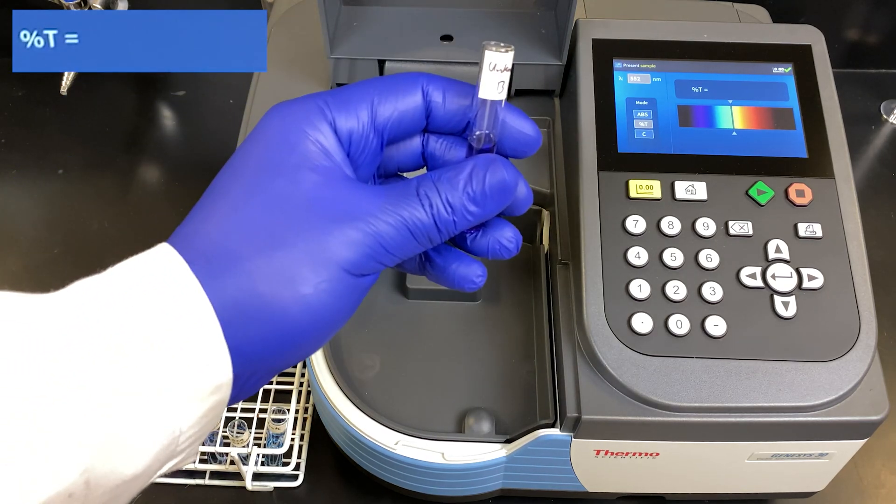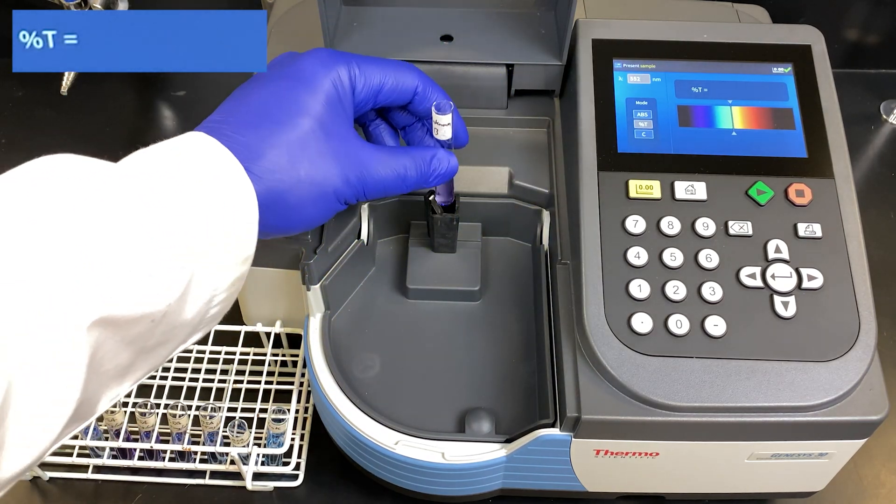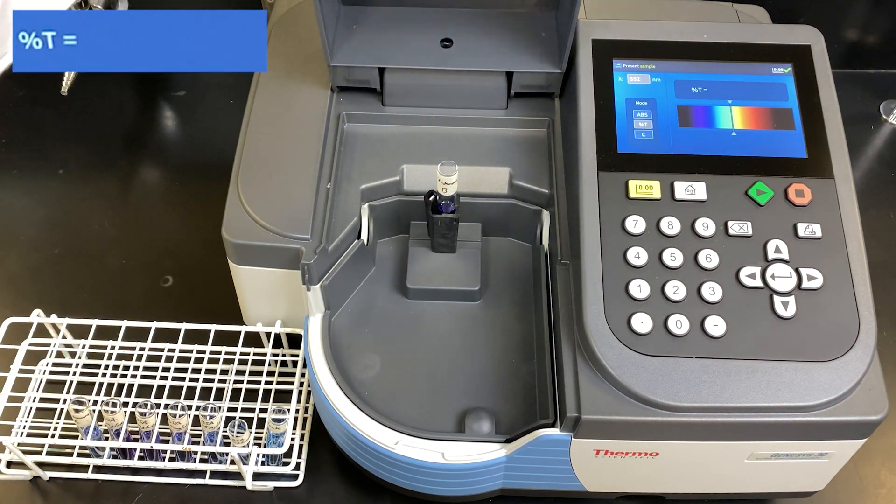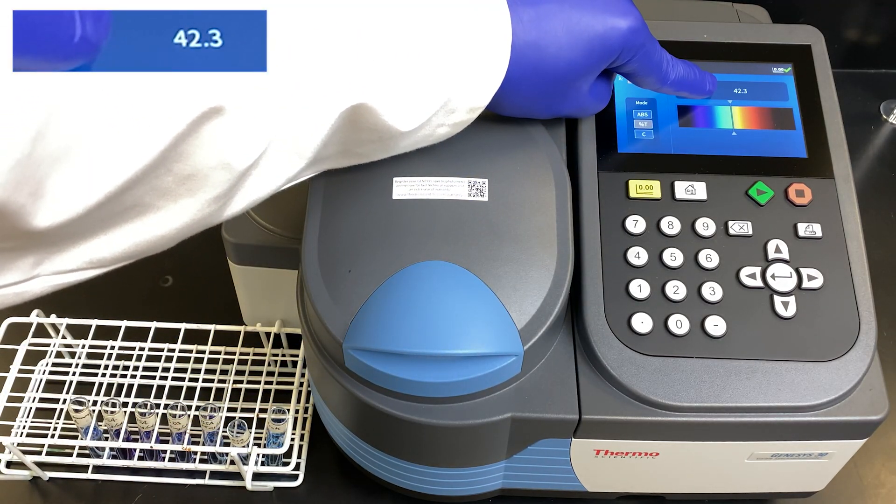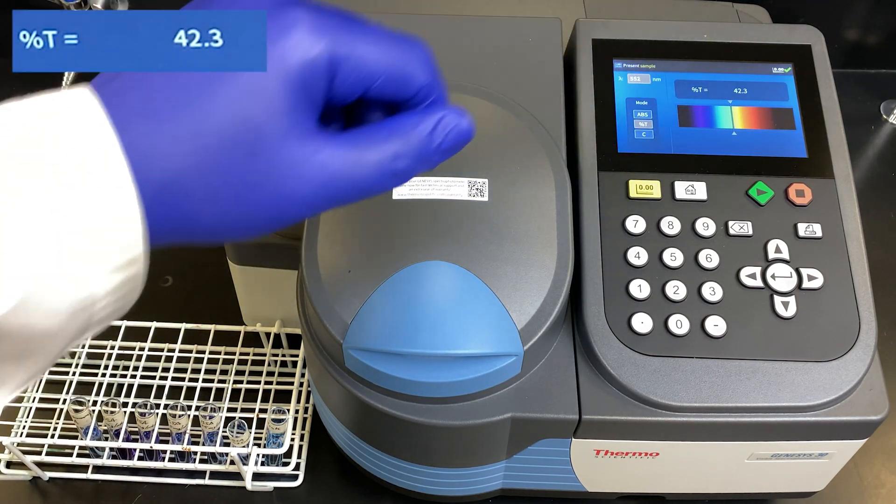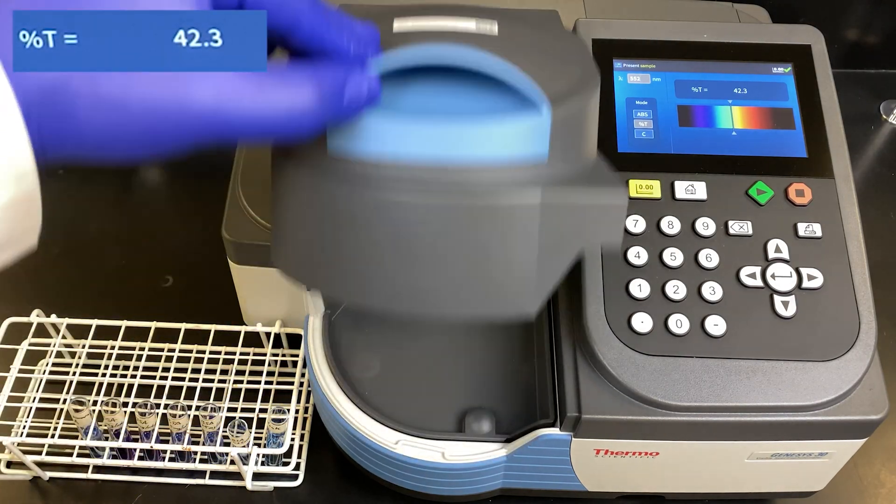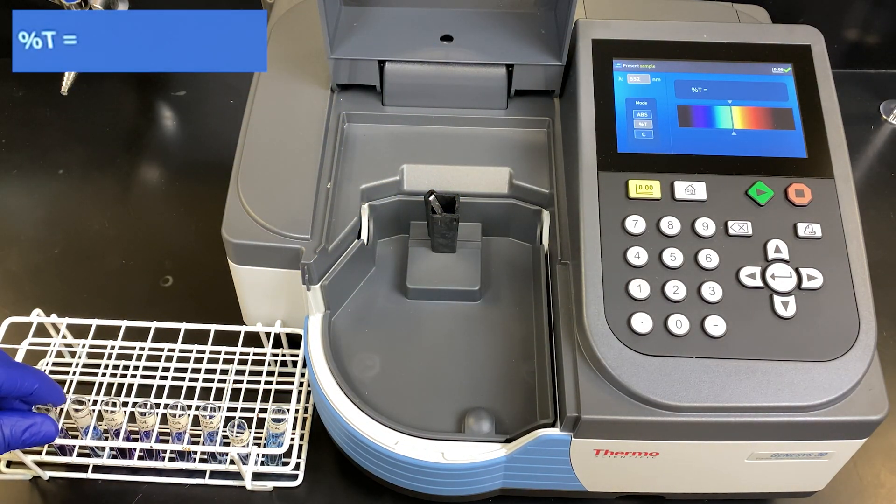Unknown B now, the darker colored one. Wait for it to stabilize. 42.3. Now, plot that on your standard curve and determine what the concentration of the unknowns are.